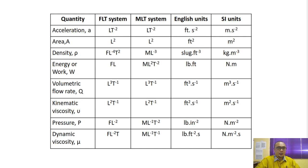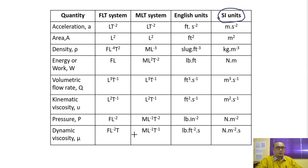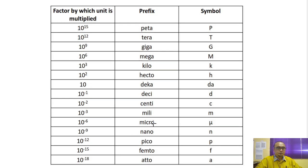Ini adalah perbandingan untuk unit system. Kita akan ada FLT system. Lepas, kita ada MLT system. English unit. And kita ada SI unit. So biasanya kita akan pakai dalam subjek ni kita akan pakai SI unit. So nanti boleh tengok. Saya rasa you all pun dah familiar kalau macam area ni adalah meter squared. Density is kilogram per meter cubed.